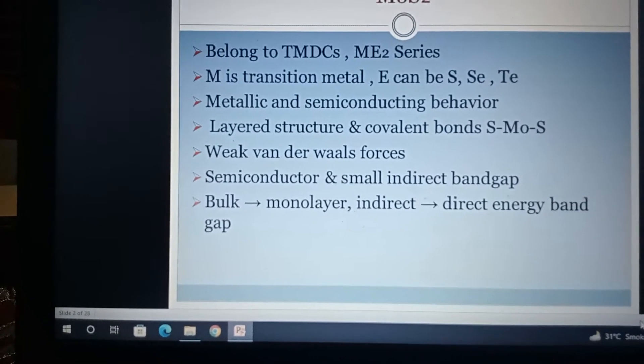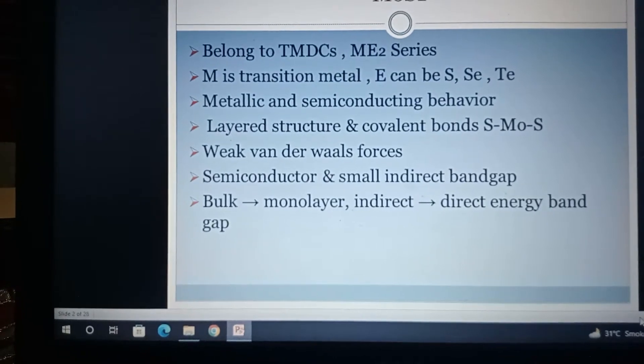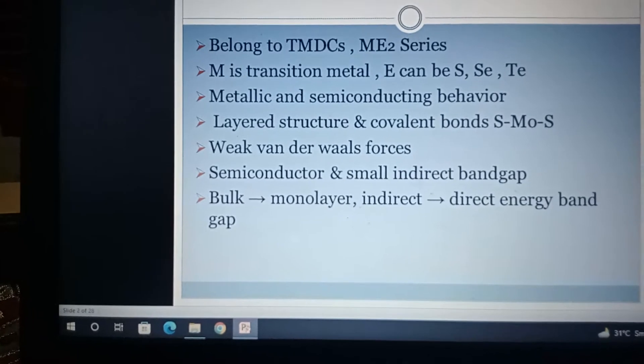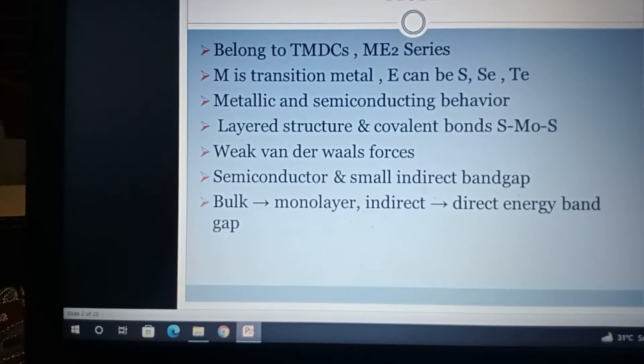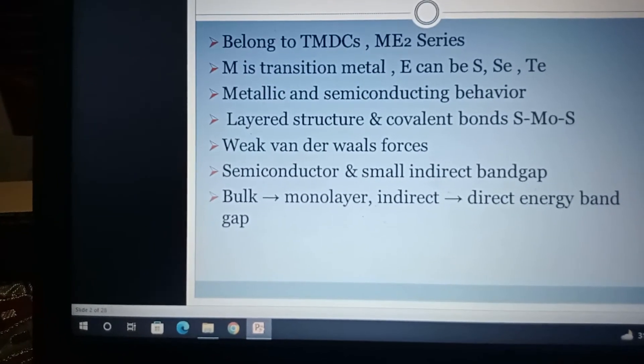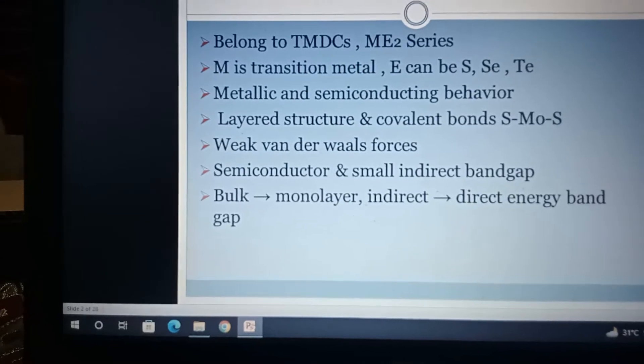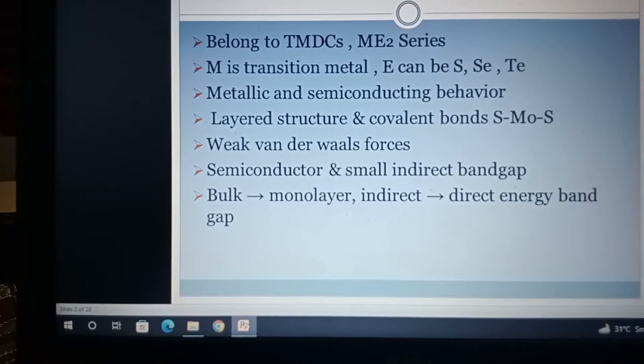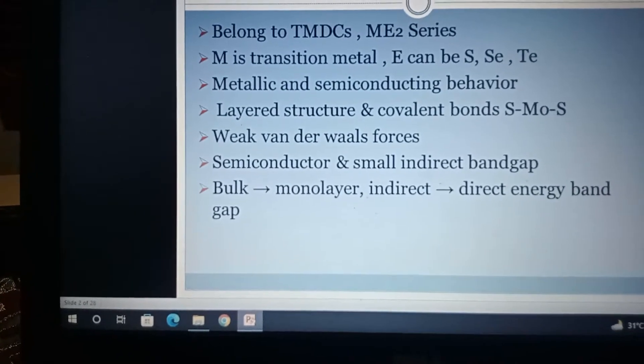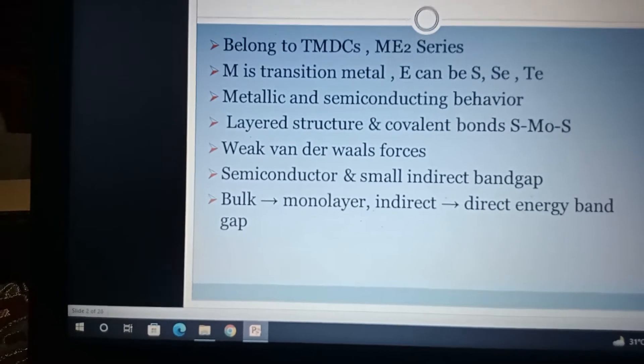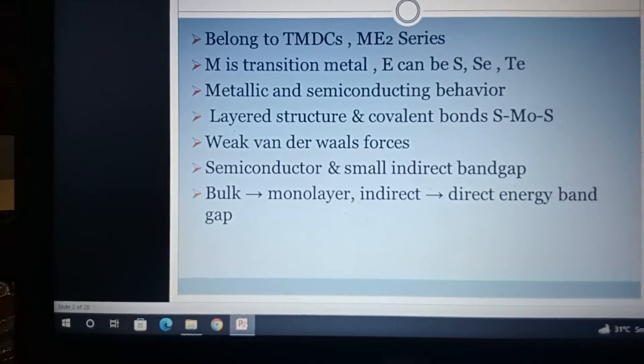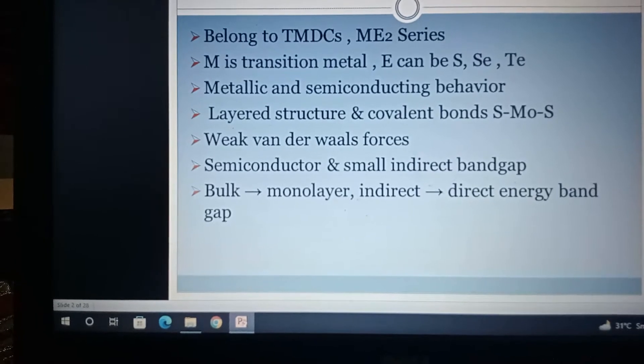MoS2 has a layered structure with covalent bonds between S, Mo, and S. MoS2 basically consists of covalent bonds formed between molybdenum and sulfide atoms. Mo lies at the center and S lies at its surrounding. There are weak van der Waals forces among molybdenum and sulfide. MoS2 has semiconductive nature and small indirect bandgap.